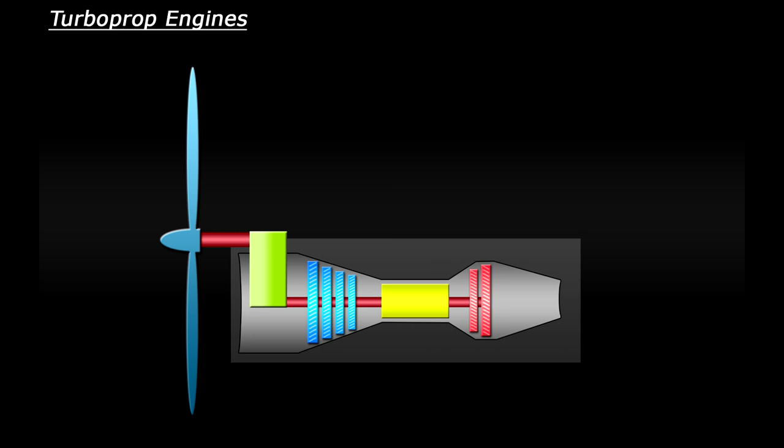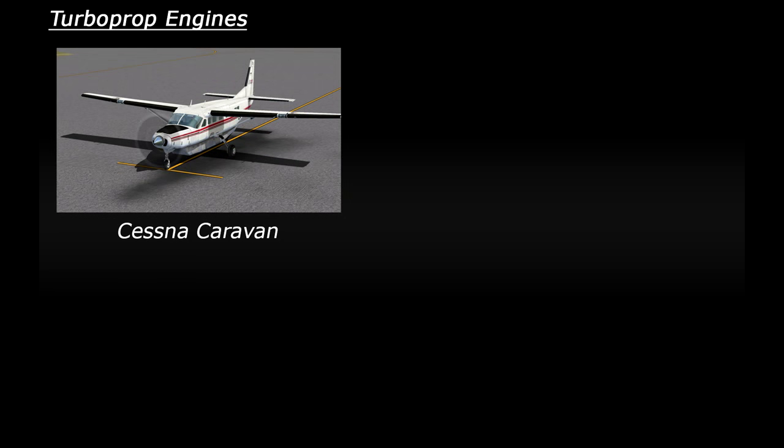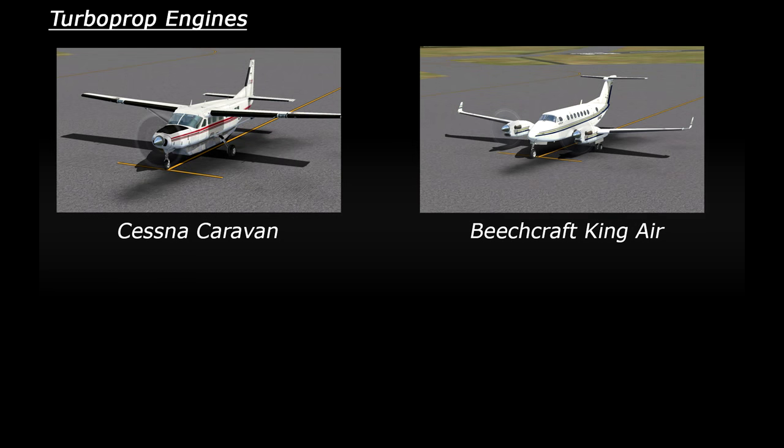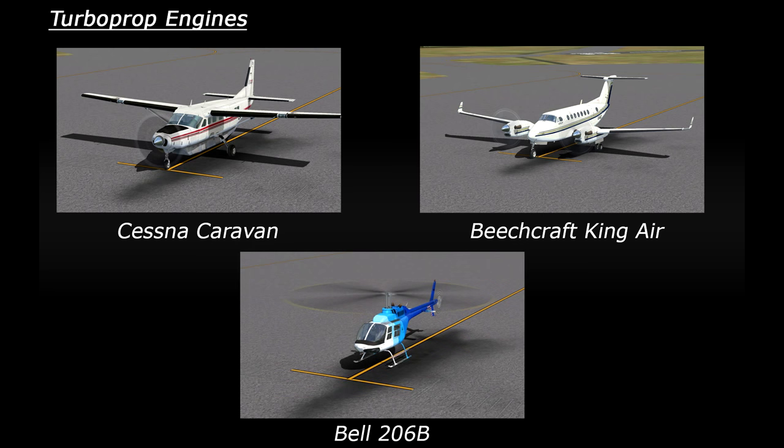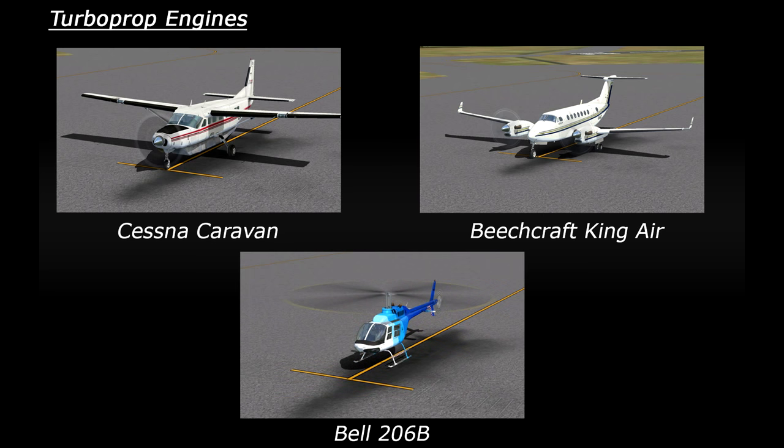It's also worth noting that in a turboprop engine, a lot of the power generated by the turbine is sent through the shaft and gearbox to the propeller. The thrust effect of the exhaust gas is very low compared to a dedicated jet engine. Some of the turboprop aircraft in FSX are the Cessna Caravan, the Beechcraft King Air and also the helicopters use a very similar type of engine to a turboprop.